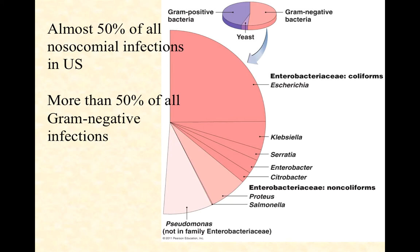The larger pie shown underneath represents the gram-negative slice — slightly over 50%. In the darkish pink, going from noon to about 5 o'clock, pointing to Salmonella, just under 50% of all nosocomial infections — and by far the vast majority of all gram-negative infections — fall into the family of Enterobacteria. It's a very important group and probably the most important among the gram-negatives. The biggest slice is the coliforms within the Enterobacteria.